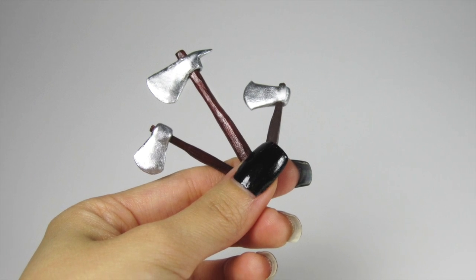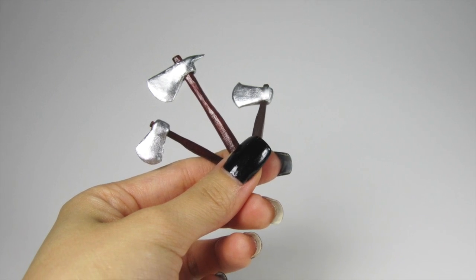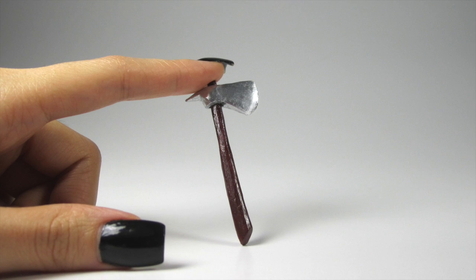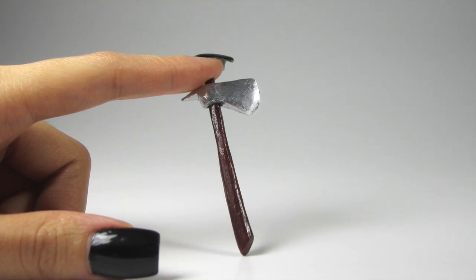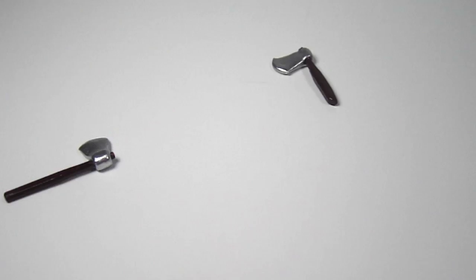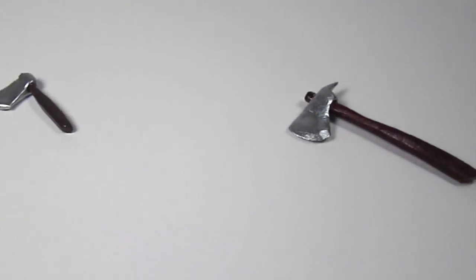Hi guys! Today I have a subscriber requested tutorial for you. We're going to make a miniature replica of Rick's hatchet from The Walking Dead. This is a super simple tutorial using a brand new product that I recently just discovered. Let's get started!